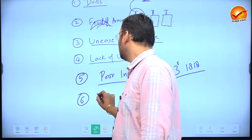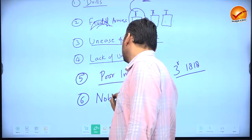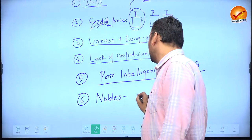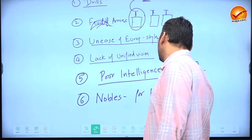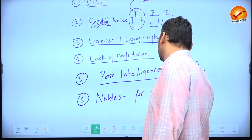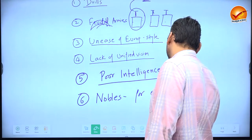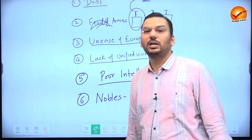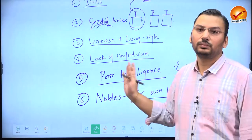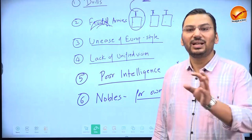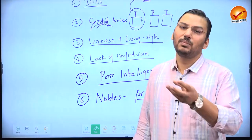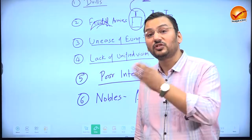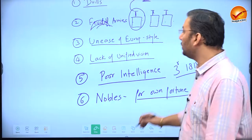Sixth: the nobility. The biggest problem was the nobles — zamindars fighting for their own fortune, ready to switch sides whenever opportunity permitted. Mir Jafar is the classic example. Why didn't the British face this problem? The difference lies between nobility and bureaucracy.